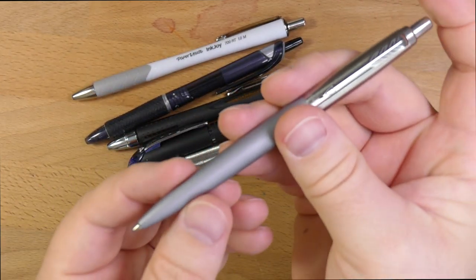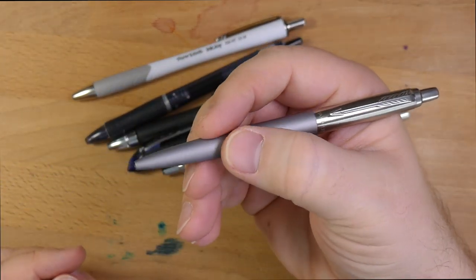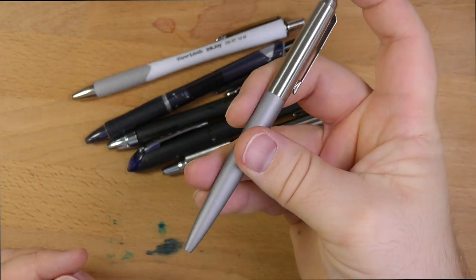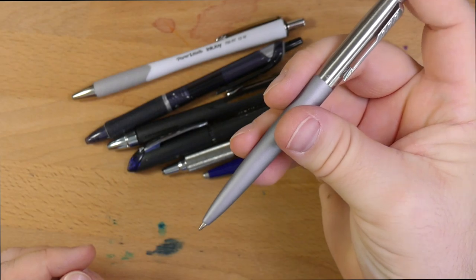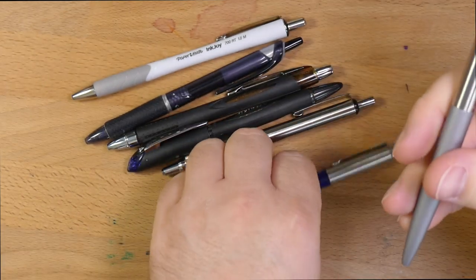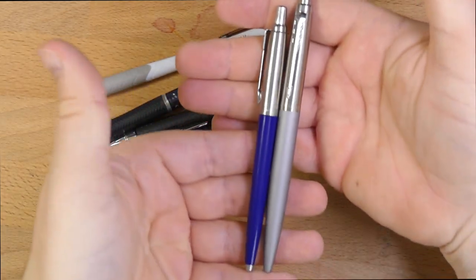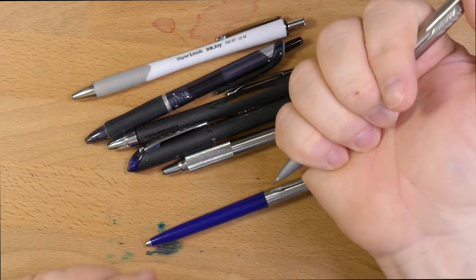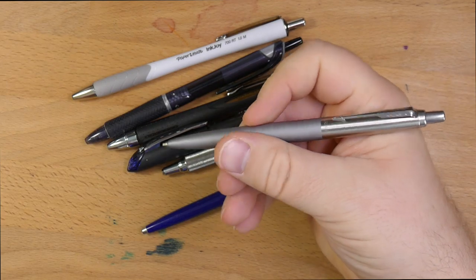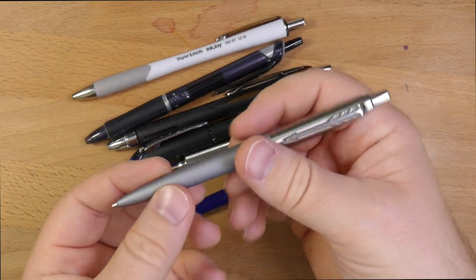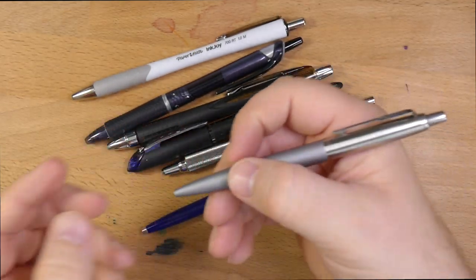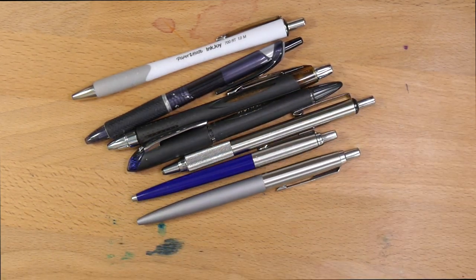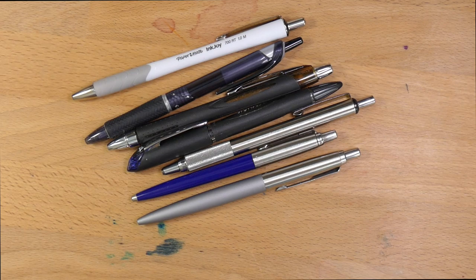Then this is the Parker Jotter XL, which is actually pretty recent. And I picked this up from Goldspot or something like that. Maybe Bertram's Inkwell. I forget where I got this exactly. But these are a bit more expensive. But they're also quite a bit larger and heavier than the original Jotter. Even the metal one. I have a metal body Jotter. But this guy is heavier. It's got some heft to it. It's got a good feel. It's got an all-metal barrel. And I think the Jotter XL is really kind of the winner of the Jotters. But Parker Jotter. Solid, solid pen.